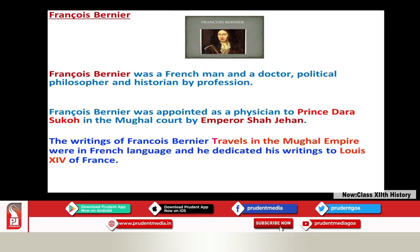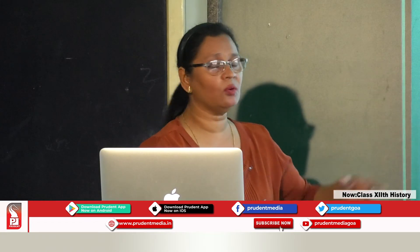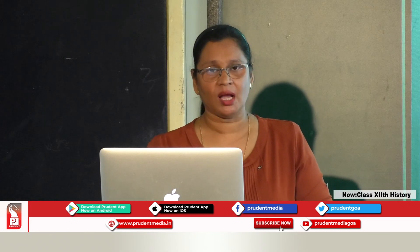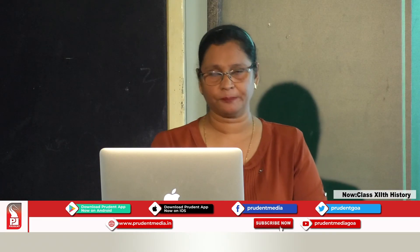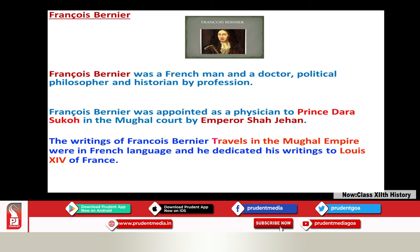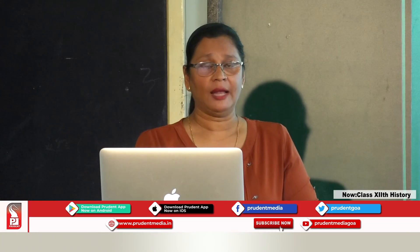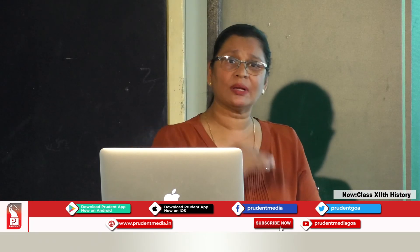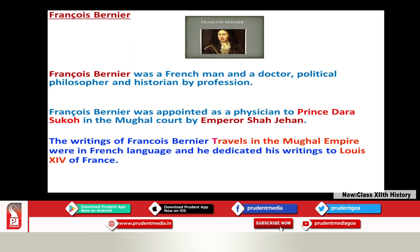Now we move on to the third traveller — François Bernier. He visited India in the 17th century and was from France. He was a doctor, a political philosopher, and a historian by profession. Since he was a doctor, he was appointed as a physician to Prince Dara Shukoh, who was the son of Emperor Shah Jahan. Whatever Bernier observed about India is penned down in his work Travels in the Mughal Empire. In this work, he compared all his observations about India with the European society.